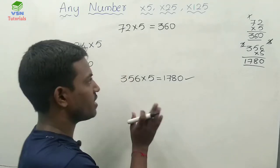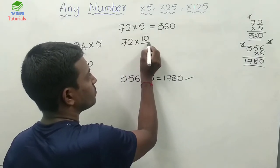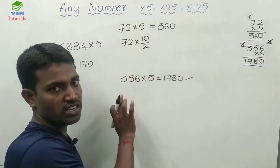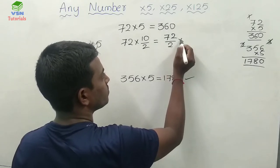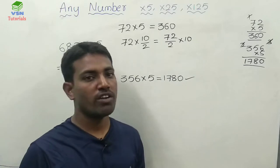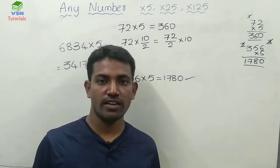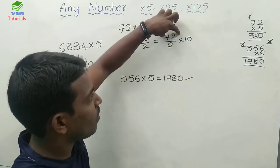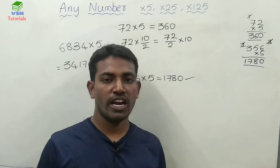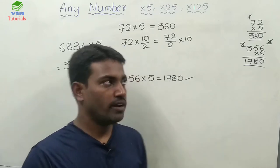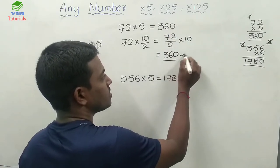Now concentrate, friends. For convenience, I am rewriting 5 as 10 divided by 2 — because 10 by 2 is 5 itself. So rearrange: 72 into 5 becomes 72 divided by 2, then multiplied by 10. Dividing any number by 2 and multiplying by 10 is very easy. So 72 divided by 2 is directly 36, and 36 into 10 is 360. Yes, this is the logic.